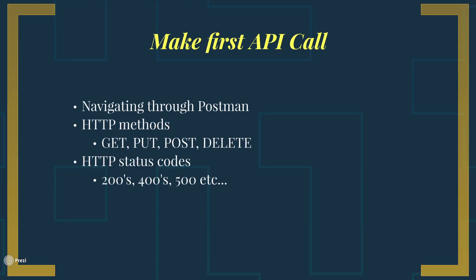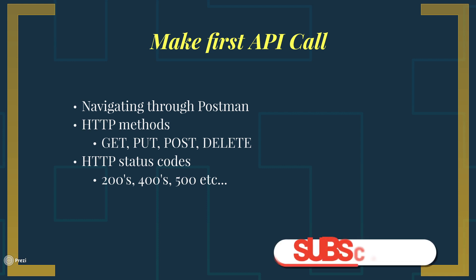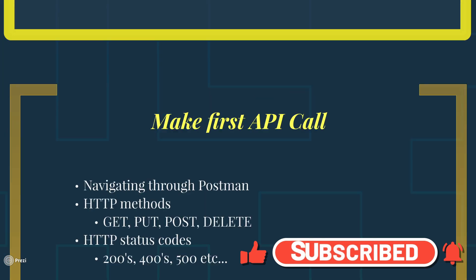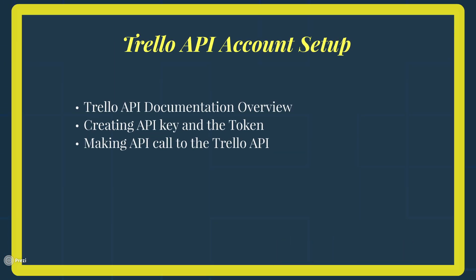We will wrap it up with doing the installation of Postman. After that, we will move on to making our first API call using Postman. There we will navigate through Postman, understand how Postman works, and then we will talk about different HTTP methods — so we will cover GET, PUT, POST, and DELETE. We will also talk about how HTTP status codes work and what 200, 400, and 500 mean. From there, we will set up our Trello API account. We will be using Trello to make our API calls and interact with Trello for all our API test automation, beginning with an overview of the Trello API documentation, then creating the necessary API key and token to access the Trello API, and making our first API call to verify everything is working.